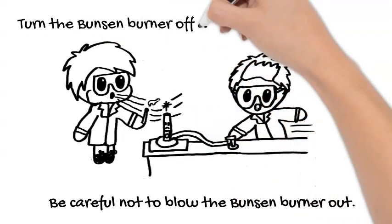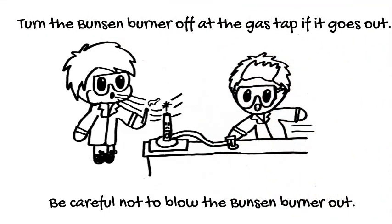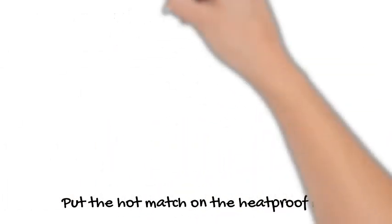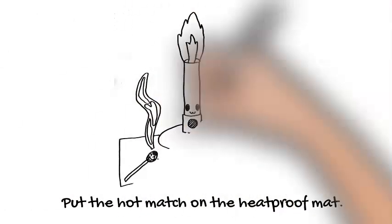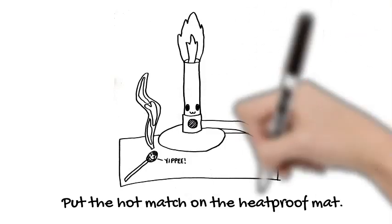If the Bunsen burner does go out for any reason, turn off the gas tap immediately. When you've put out your match, put it on the heatproof mat under your Bunsen burner. Don't put it on the bench or straight into the bin.